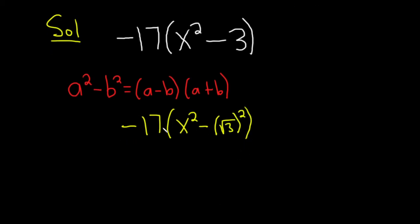And then you can apply the difference of squares formula. This is negative 17 parentheses. So your a is x and your b is the square root of 3. So it'll be x minus the square root of 3 times x plus the square root of 3.